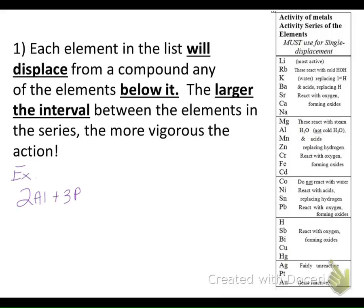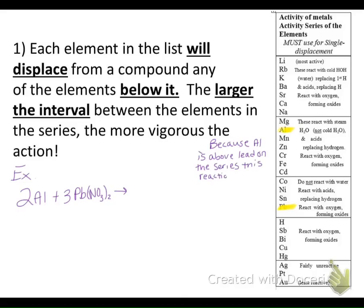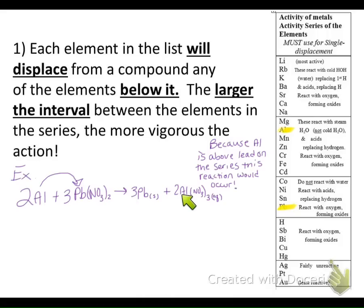Here's another example: aluminum and lead nitrate. We check whether aluminum is above lead on the activity series — and you should always check your activity series first before finishing these reactions. Because aluminum is above lead, we know this reaction would happen, so we can finish the equation and balance it. Aluminum kicks off the lead in the compound, creating lead and aluminum nitrate.